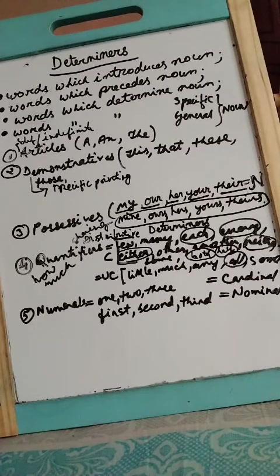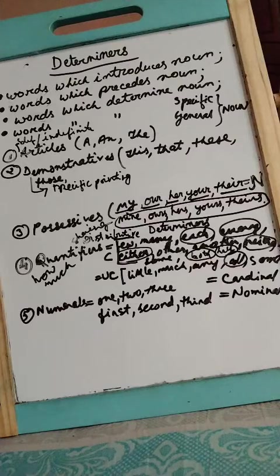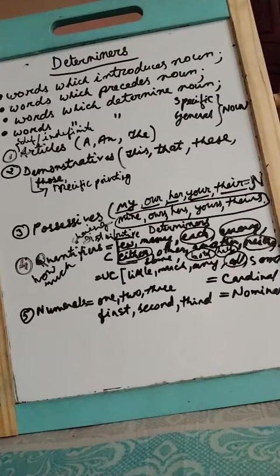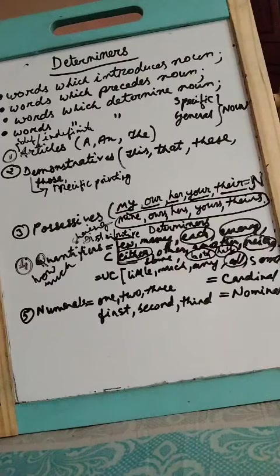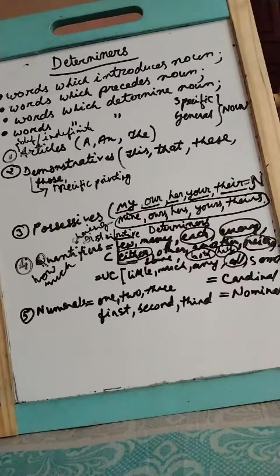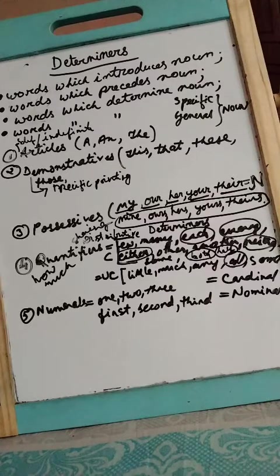Second category is demonstrative determiners. This is also easy. Determiners are actually quite easy. What you have to do is you have to remember and practice. This, that, these, those - these are all demonstrative determiners.